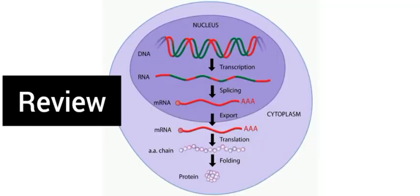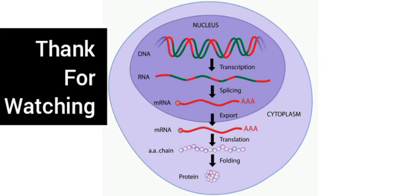تو ایک دفعہ review لیتے ہیں: سب سے پہلے nucleus میں DNA ہوتا ہے، DNA سے RNA بنے گا — اس پورے عمل کو ہم transcription کہتے ہیں۔ اس میں introns کو remove اور exons کو join کیا جائے گا، پھر messenger RNA تیار ہوگا۔ Cytoplasm میں بھیجنے سے پہلے mRNA کے ساتھ ایک cap اور ایک tail لگائی جائے گی۔ پھر cytoplasm میں ribosomes پر translation ہوگی جس سے proteins بنیں گی، اور انہیں cell کے باہر بھی بھیجا جا سکتا ہے یا cell کے اندر بھی use کیا جا سکتا ہے۔ یہ پورا procedure transcription اور translation کا ہے۔